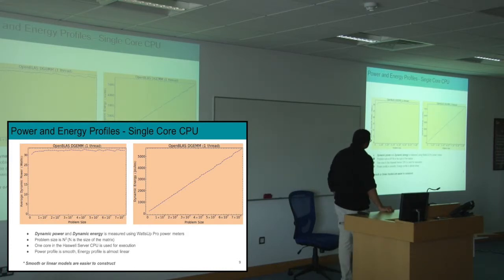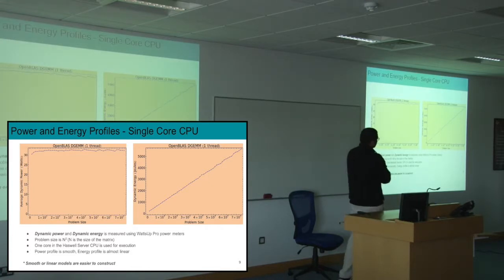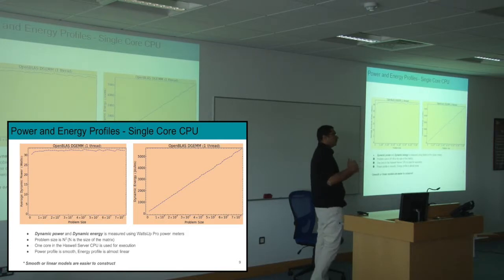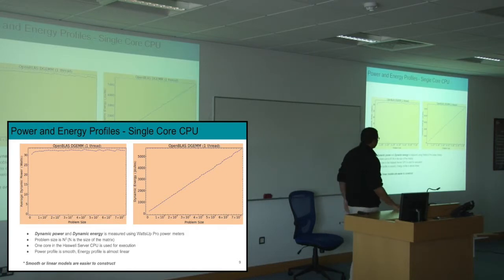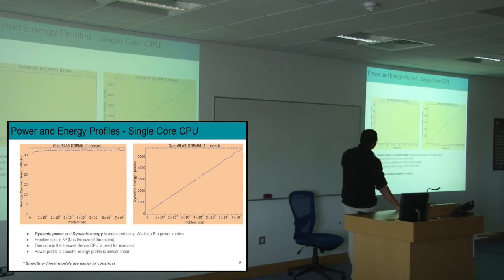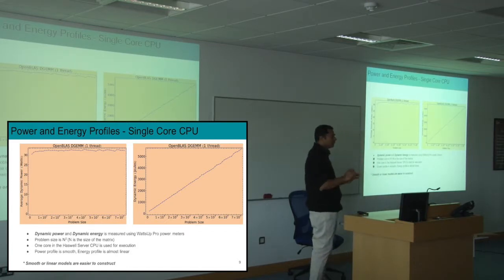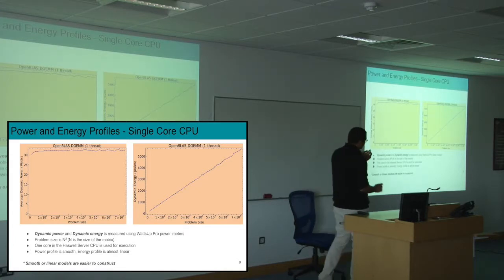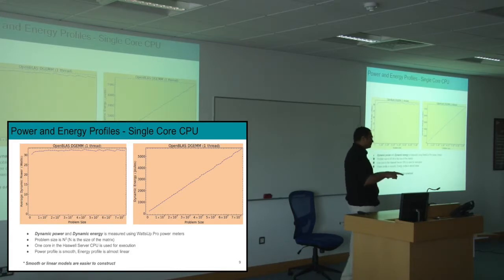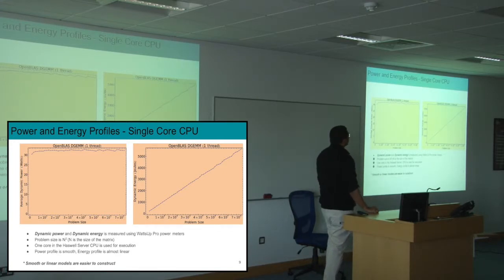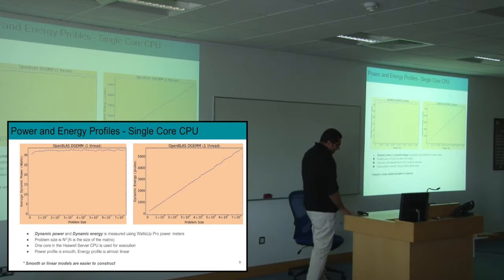I'm showing you the average dynamic power of the same application against problem size. Dynamic energy is almost linear, which is the perfect thing you can ask for. This is the situation before multi-core happened — a very nice situation to be in. The power profile is smooth and the energy profile is almost linear. Dynamic power and dynamic energy are the power and energy consumed by the application alone — we've removed the base power from the total. These are measured using Watts Up Pro meters connected to the node, not software models, since we didn't find an accurate software model for this.